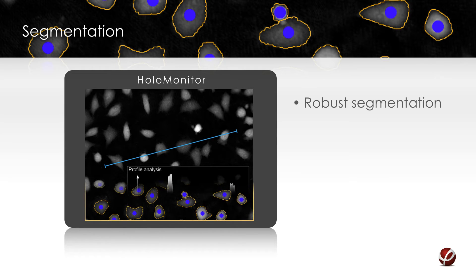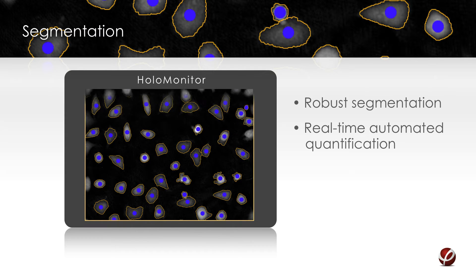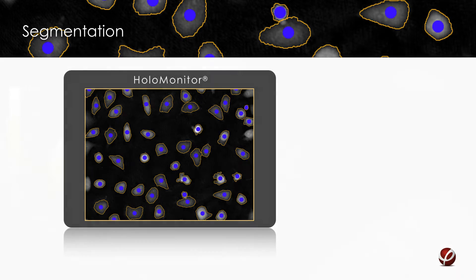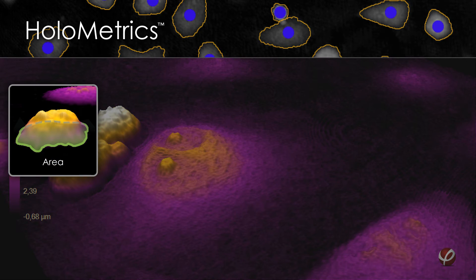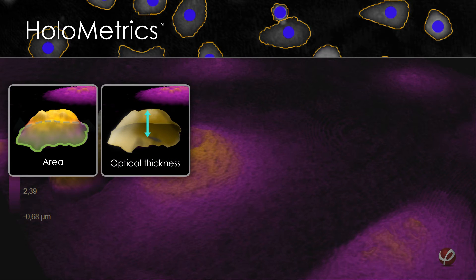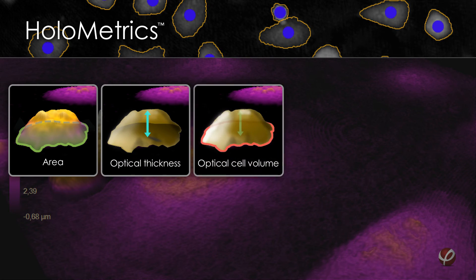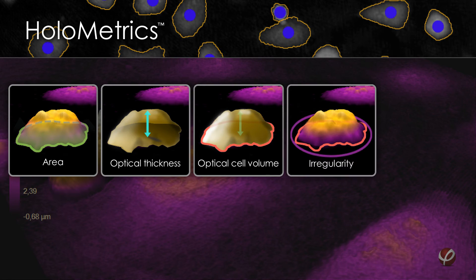HoloMonitor methodology enables reliable segmentation, seen in the image as yellow cellular boundaries defined by a proprietary software algorithm. From the segmented events, a wide variety of quantitative features are calculated. The most fundamental are area, optical thickness, optical cell volume, irregularity, and texture.